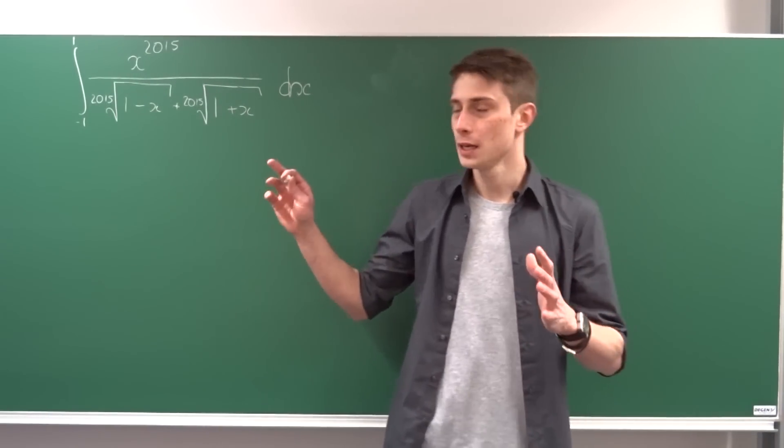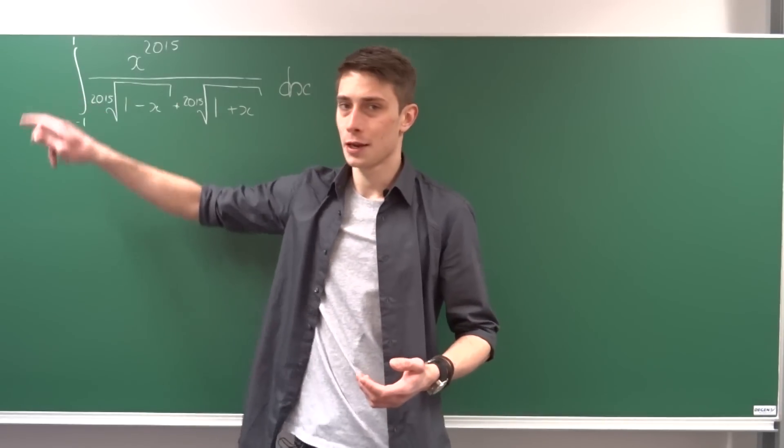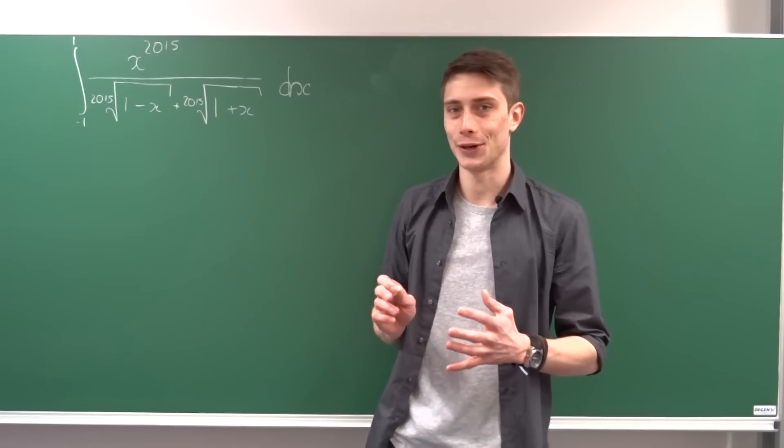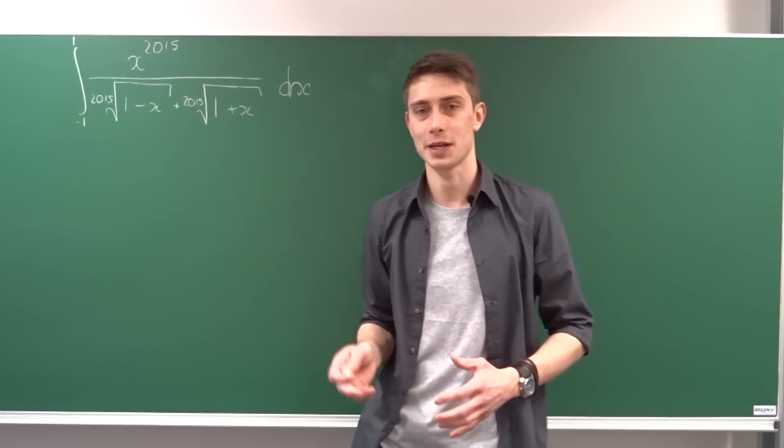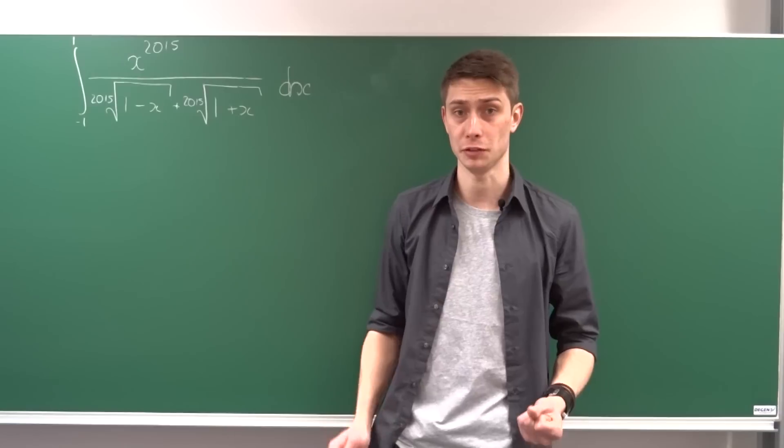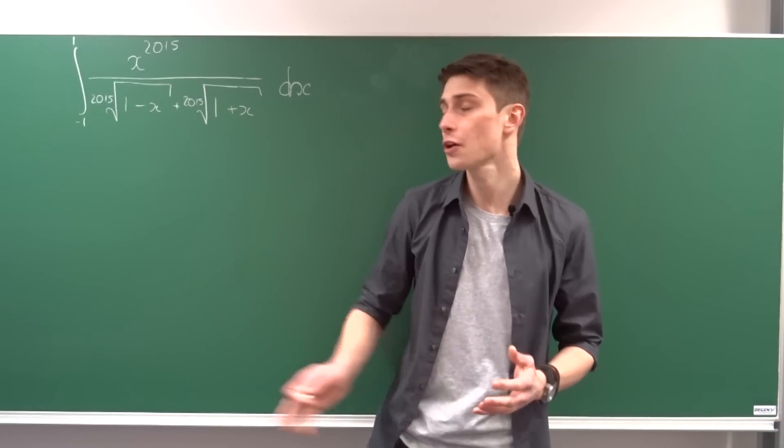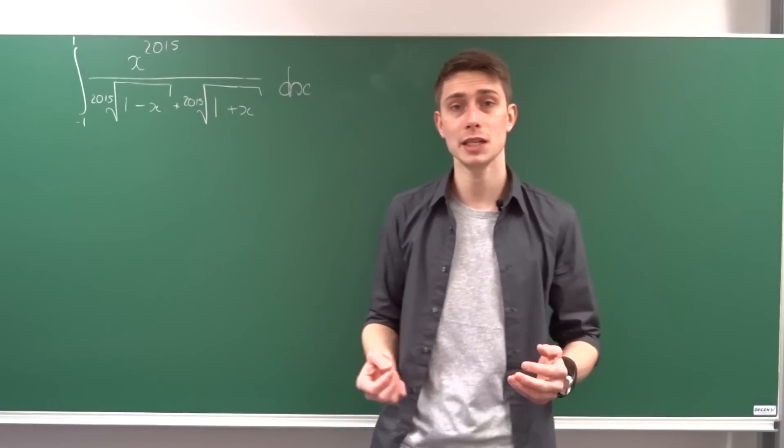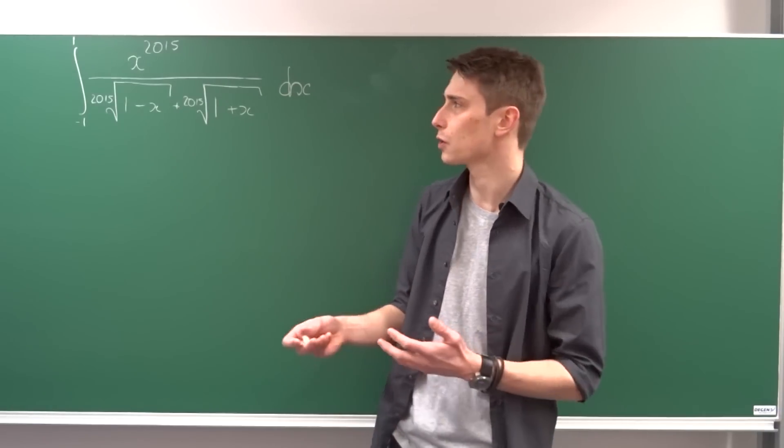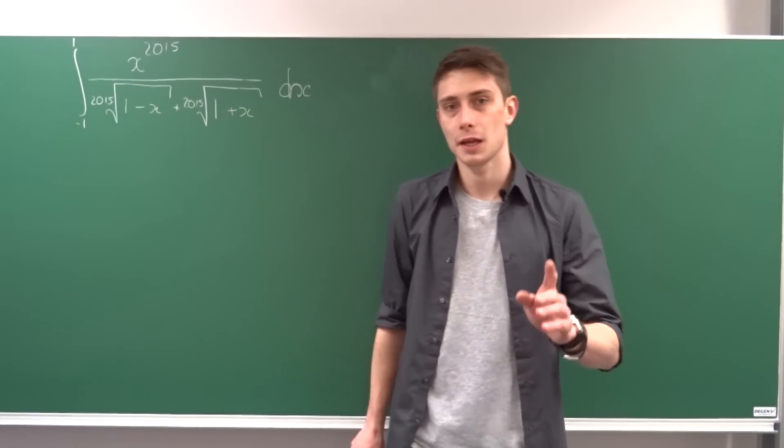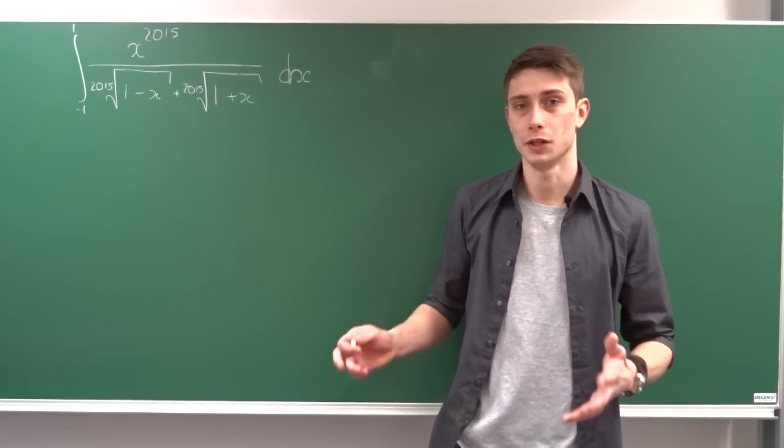For this integral, if I see symmetric bounds on an integral, for example from minus a to a, I'm always checking if the function is odd or even. Because if the function is odd over a symmetric integral, that would mean that it would just be zero. We are going to check for that. And I want you guys to remember what an odd or an even function is.